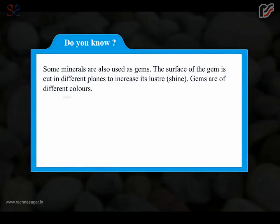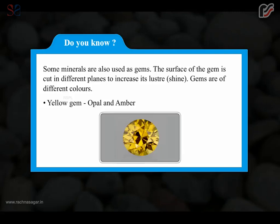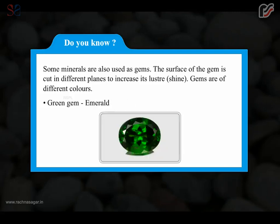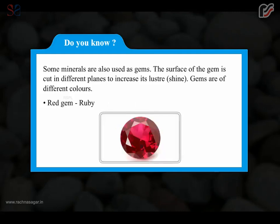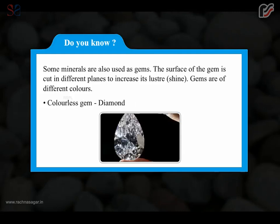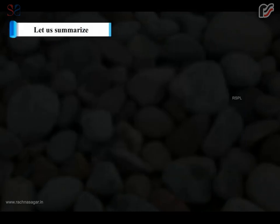Some minerals are also used as gems. The surface of a gem is cut in different planes to increase its luster and shine. Gems are of different colors: yellow gem — Opal and Amber; green gem — Emerald; blue gem — Sapphire; red gem — Ruby; colorless gem — Diamond.